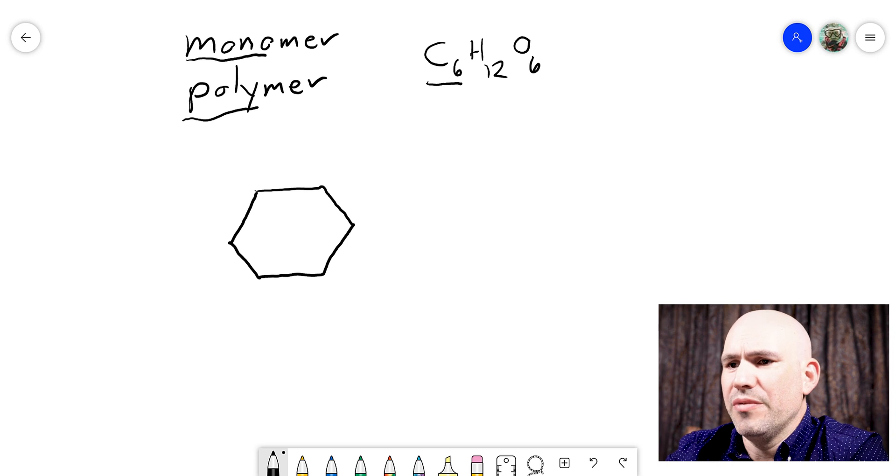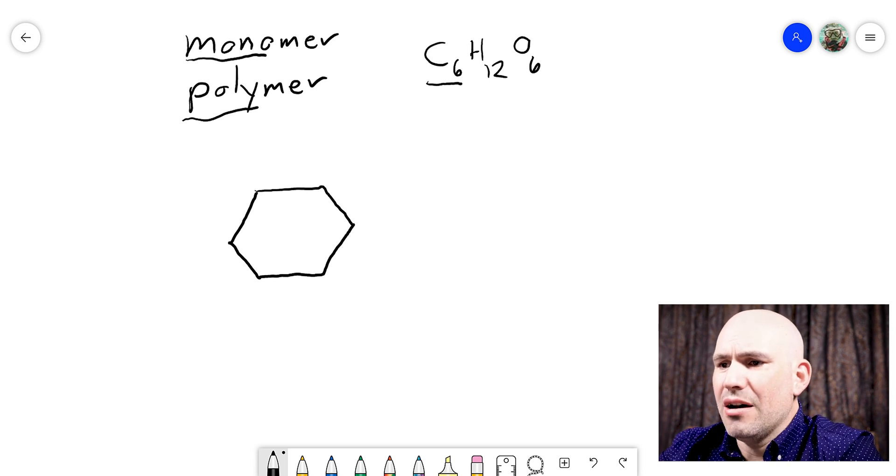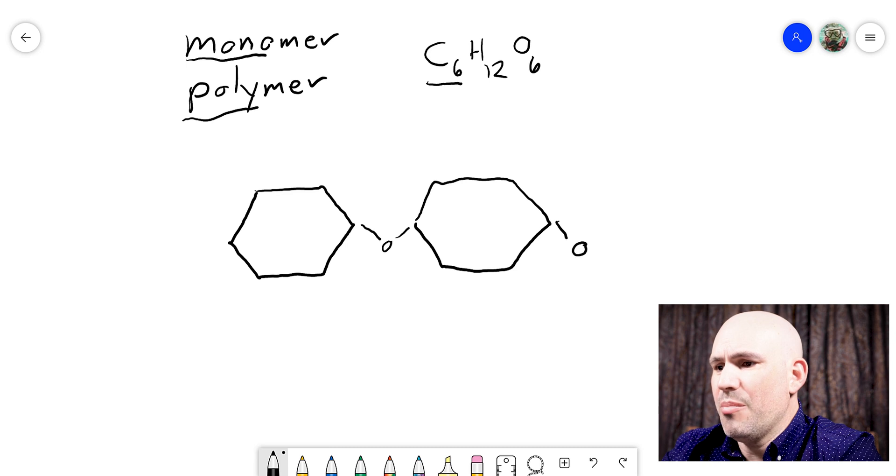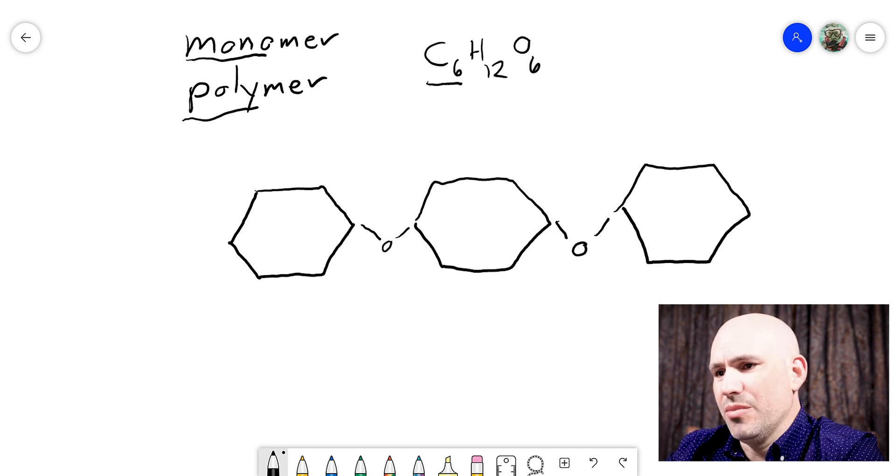Okay, so glucose is a monomer. It is one piece of a biological molecule. Now, if we wanted to make a longer chain of sugar, we can connect more monomers together. And when you connect monomers together, this becomes what we call a polymer. So polymers are multiple monomers connected together. Now, I want to talk to you about how we join monomers together to make a polymer.